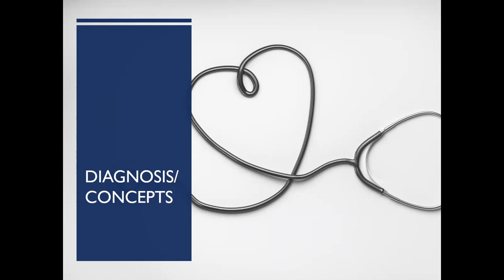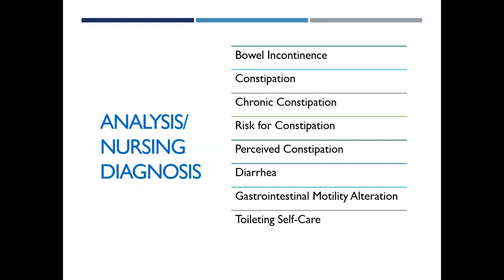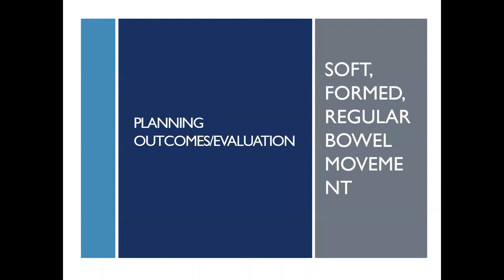Moving to nursing diagnosis, nurses want to assess for bowel incontinence or constipation — is it acute, chronic, or perceived? For example, if a person normally goes three times a day and doesn't go one day, that would be perceived constipation — they would not fit the true definition. Are they having diarrhea or issues with self-care? The overall goal is for the patient to have a soft, formed, regular, continent bowel movement.